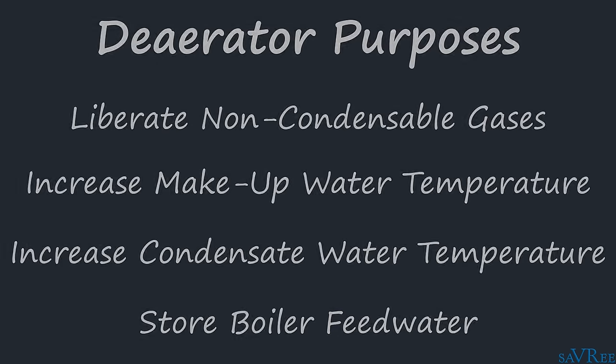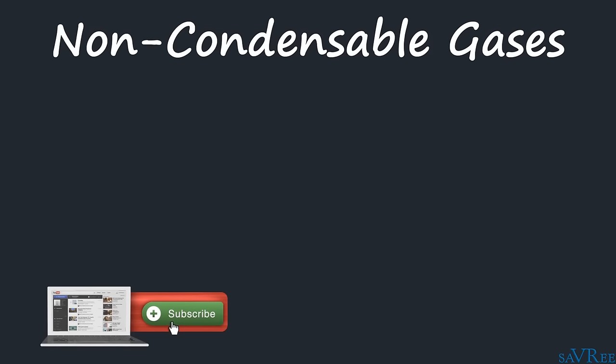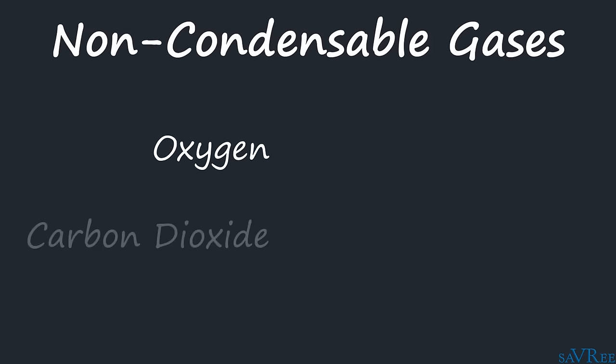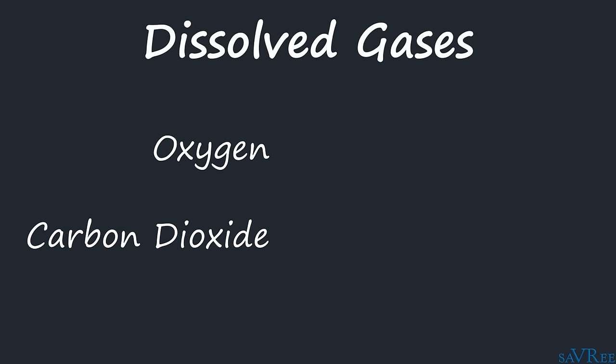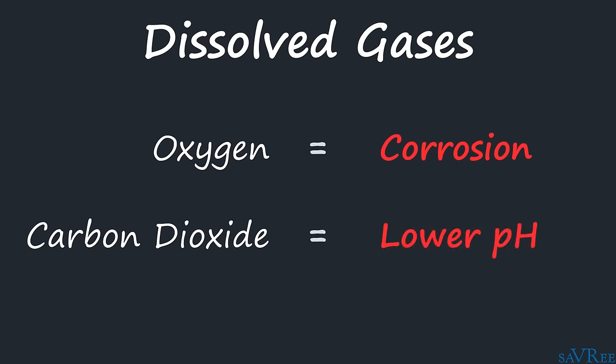When we're talking about non-condensable gases, the two gases we're most interested in are oxygen and carbon dioxide, also referred to as CO2. These non-condensable gases are present in the boiler feed water and are referred to as dissolved gases because they are dissolved into the water. The problem with having oxygen in the boiler feed water is that it can lead to corrosion. The problem with having carbon dioxide in the feed water is that it makes the water more acidic. A typical boiler will use feed water with a pH value of between eight to eleven, so if we have excess CO2, we're going to have feed water with a lower pH.